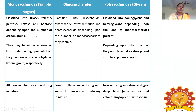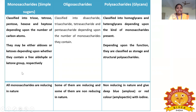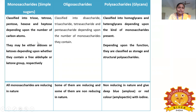Monosaccharides are classified based on the number of carbon atoms: triose (3 carbons), tetrose (4 carbons), pentose (5 carbons), hexose (6 carbons), and heptose (7 carbons). Another classification is based on functional groups: if an aldehyde group is present, it is called aldose; if a keto group is present, it is called ketose.